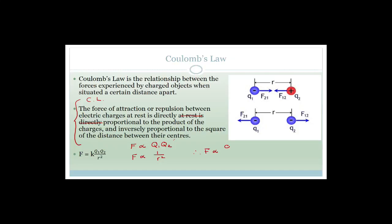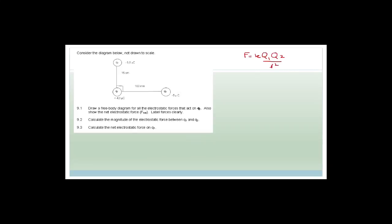The force is proportional to q1 times q2 over r squared. Coulomb determined the constant k. So we now know that F equals k·q1·q2 divided by r², where k equals 9 times 10 to the 9, with units of N·m²·C⁻². This is on your formula sheet, so don't stress about memorising the units.